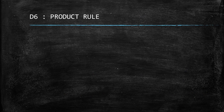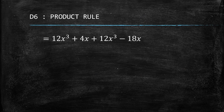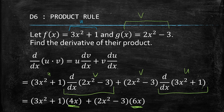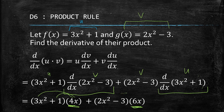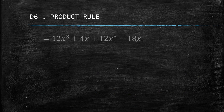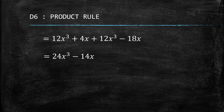We simplify further by distributing: (3x² + 1)(4x) = 12x³ + 4x, and (2x² − 3)(6x) = 12x³ − 18x. Adding like terms gives 24x³ − 14x, which is our final derivative.